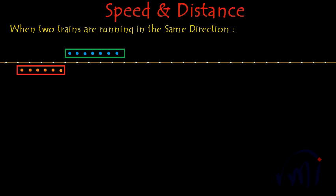Hi! Today we are learning one more concept related to speed and distance. In this concept we have two trains trying to cross each other completely. Since a train is a long vehicle, we have to consider their lengths, and there can be two cases: when both trains are running in the same direction, and another case — which will be discussed in the next video — when the two trains are running in opposite directions.